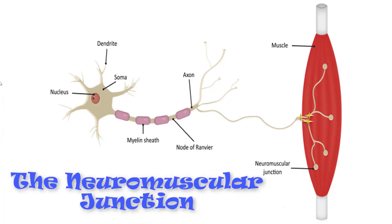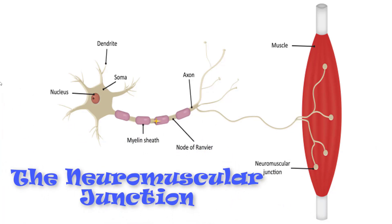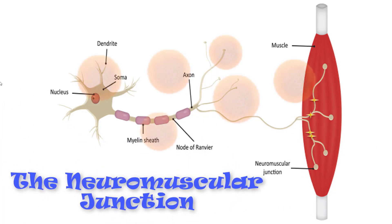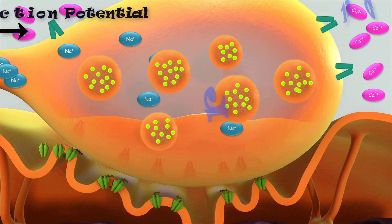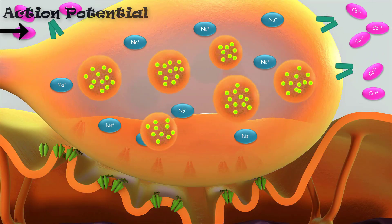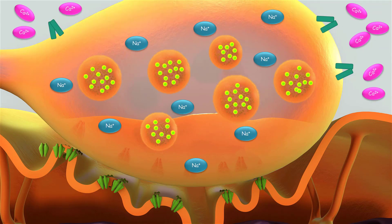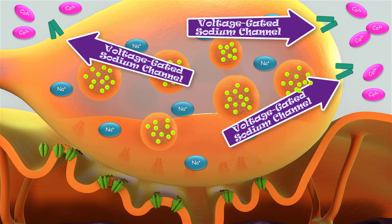The action potential is carried as positively charged sodium ions down the axon of the motor neuron. When these sodium ions reach the axon terminal, they trigger the opening of voltage-gated calcium channels.